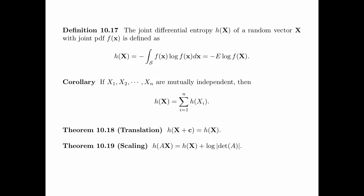The translation property says that by translating the random vector x by a constant vector c, the differential entropy does not change. We can also prove the scaling property for a linear transformation of the random vector x, namely A times x, where A is a fixed n by n matrix. Specifically, the differential entropy of A times x equals the differential entropy of x plus log of the absolute value of the determinant of A. We leave the proof of these theorems as an exercise.